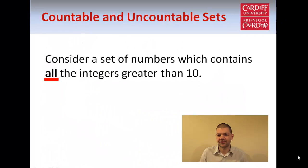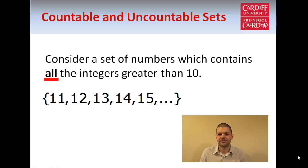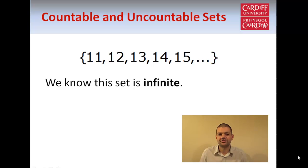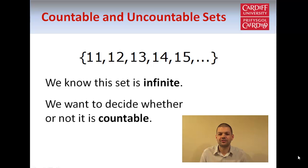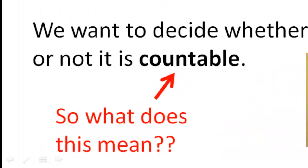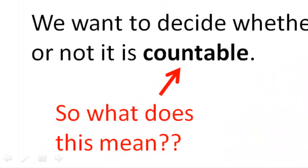So now let's move on to talking about infinite sets. Suppose we have a set of numbers which contains all of the integers greater than 10. So here's our set — it contains 11, 12, 13, and so on. This dot dot dot at the end indicates that we have infinitely many elements, so our set goes on forever. We know this set is infinite, and we want to decide whether or not it's countable. So what does this word actually mean?